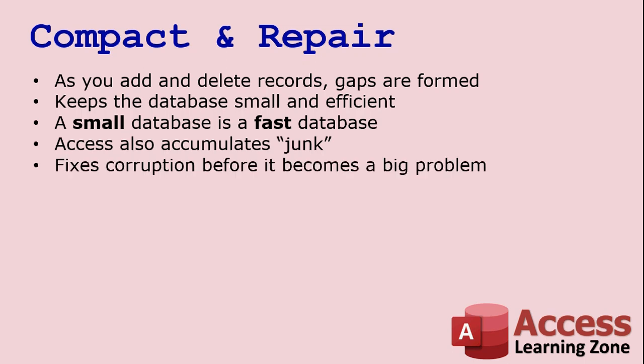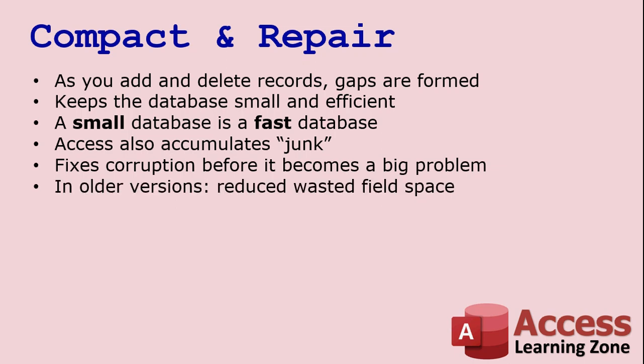So a compact and repair once in a while will get rid of all that junk. The repair part, when you do a compact and repair, can sometimes fix small problems before they become big problems. Especially long text fields — they have a bad reputation for getting corrupted. In older versions of Access, compact and repair would also get rid of wasted space between your files if you had, say, phone numbers stored in a 255 character text field. But new versions of Access don't have that problem anymore.